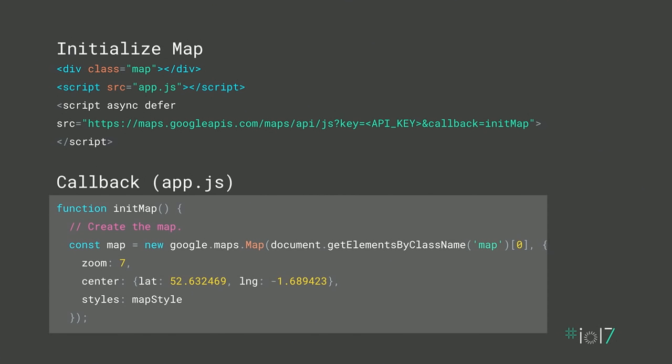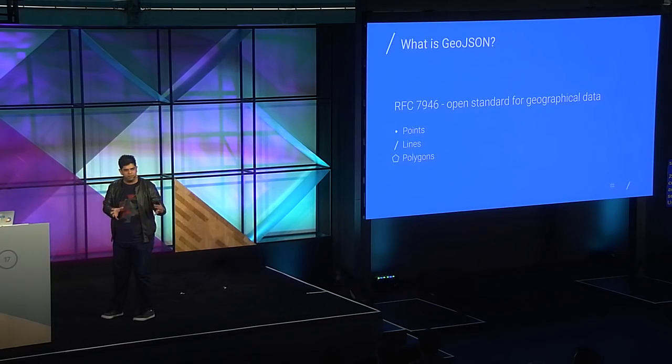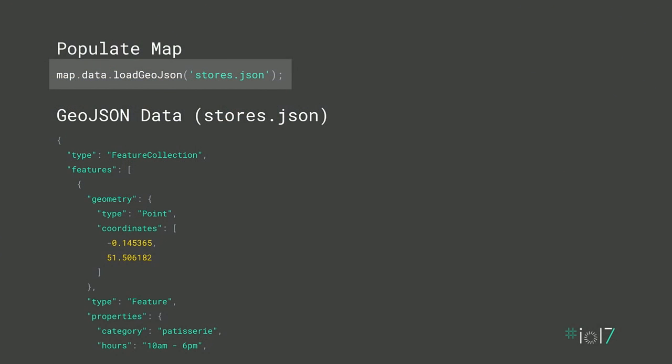We have a JSON file containing all the store data, following best practices of separating data from code. By using GeoJSON — an open standard for geographical data — we have a simple, structured JSON file. Loading it onto our map gives us advantages like pre-populating the map with data, applying marker styles, and attributing metadata automatically. Best of all, it's a single line of code: map.data.loadGeoJSON(), passing the store file. That's it.